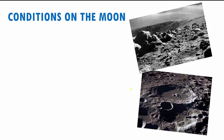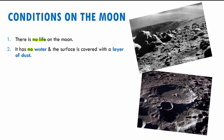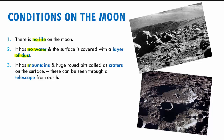Now let's see how the conditions are on the moon. We all know that there is no life on the moon, it has no water, and the surface is pretty much covered with a layer of dust. It also has mountains and huge round pits on its surface which are called craters. From the earth's surface, if we use a telescope, we can see these craters that are present on the moon.